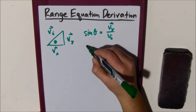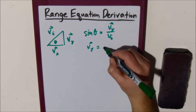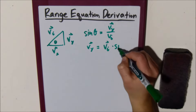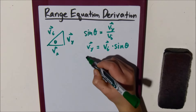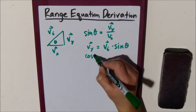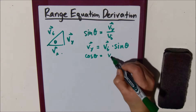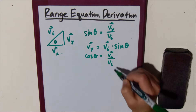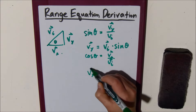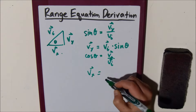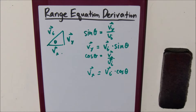We know that v y equals v initial times sine theta. And since cosine theta is the same as adjacent over hypotenuse — v x over v i — we can write v x as v initial times cosine theta.